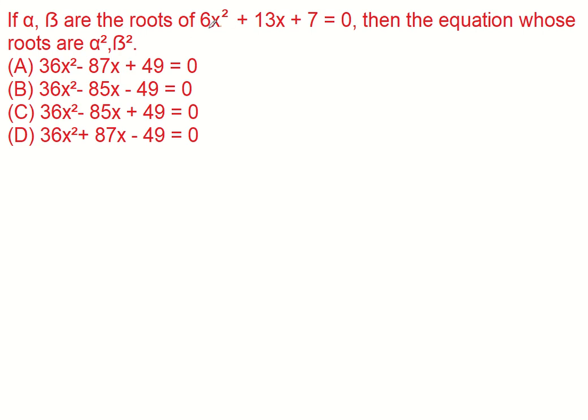If alpha, beta are the roots of 6x square plus 13x plus 7 equal to 0, then the equation whose roots are alpha square, beta square.